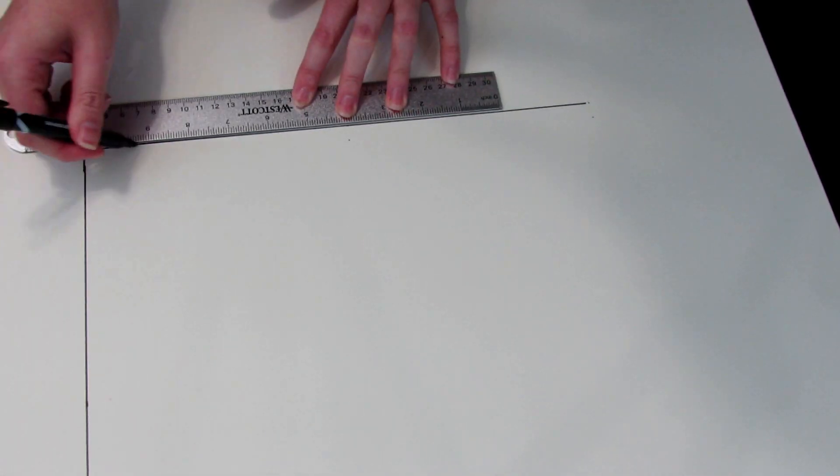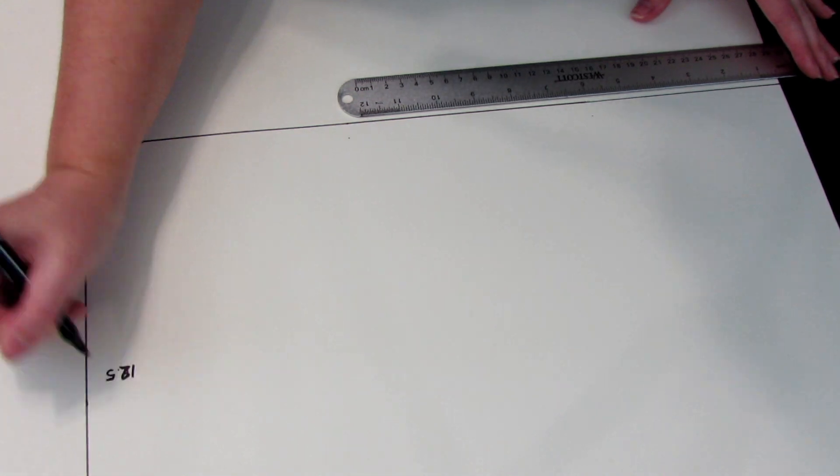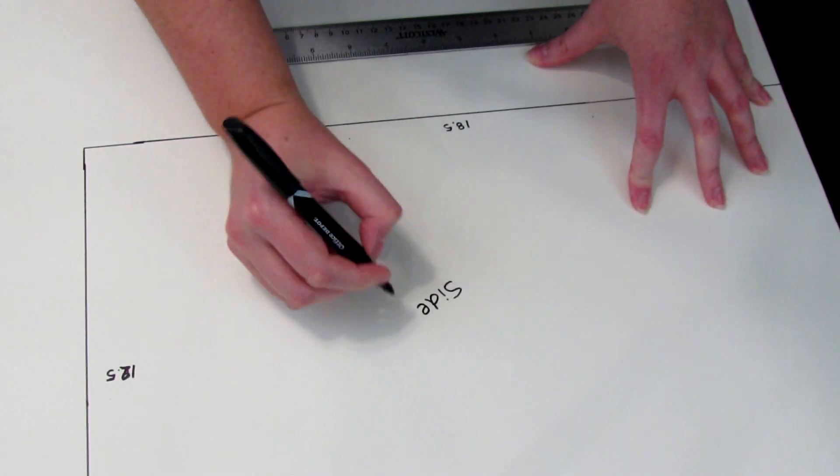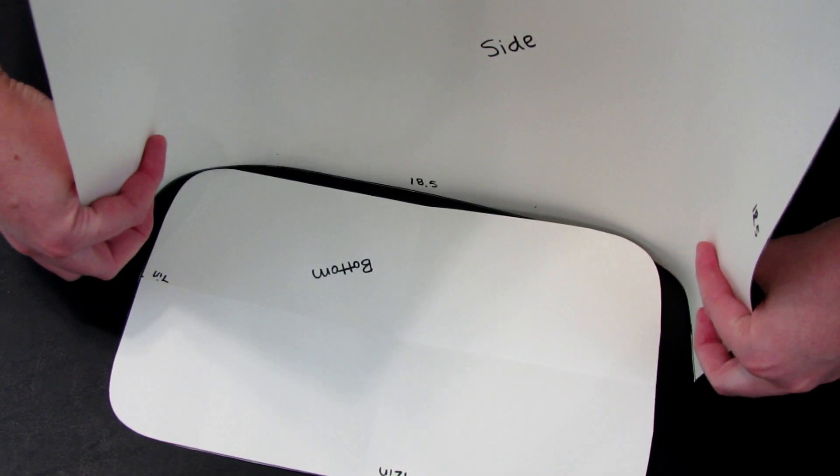My walls came out to 12.5 by 18.5 inches with seam allowance. Extra seam allowance. It was kind of too much. I could have just done the normal 12 by 18. This is me trying to show what the heck is going on.